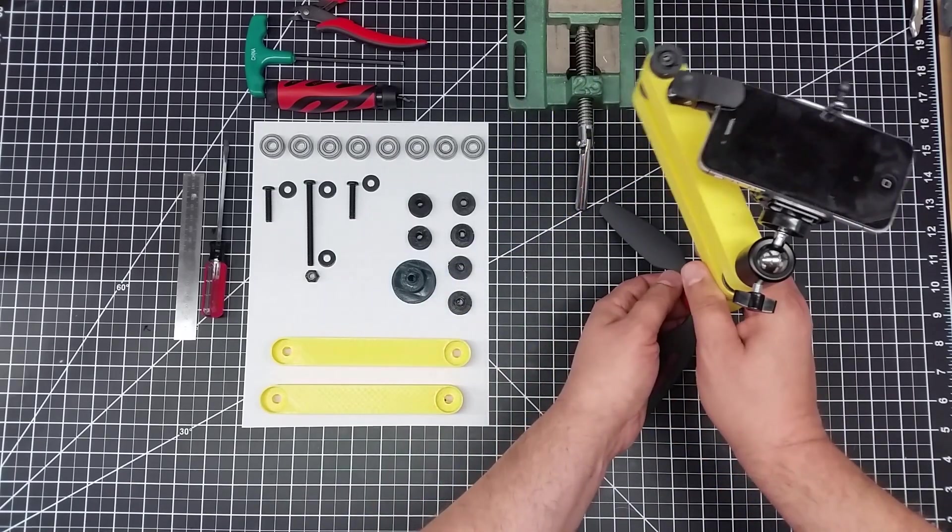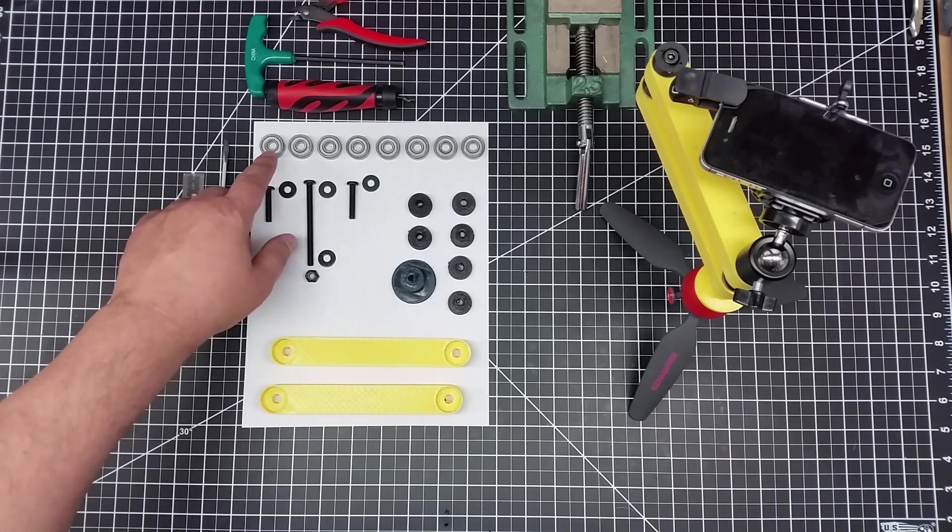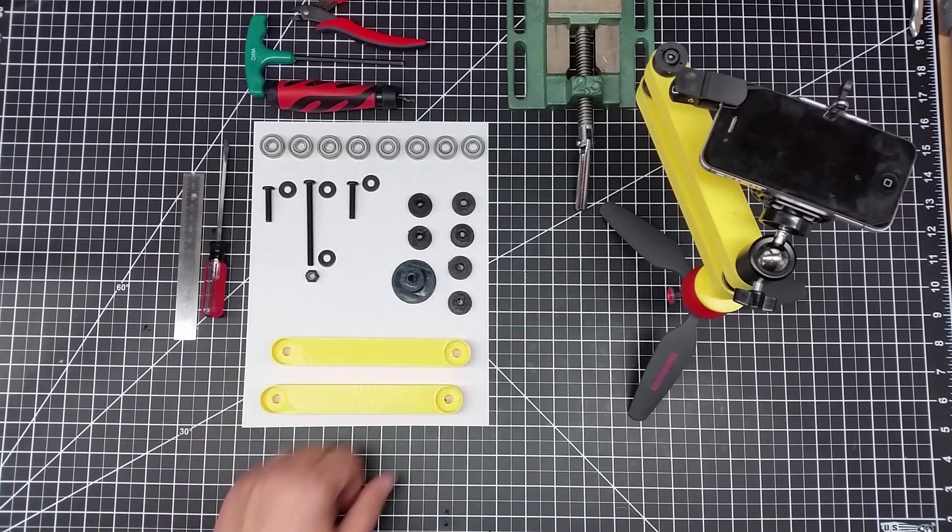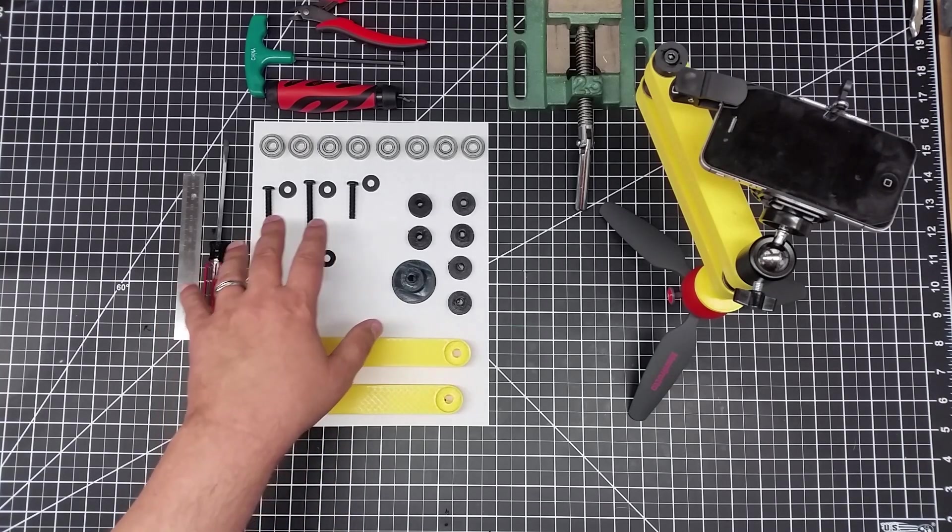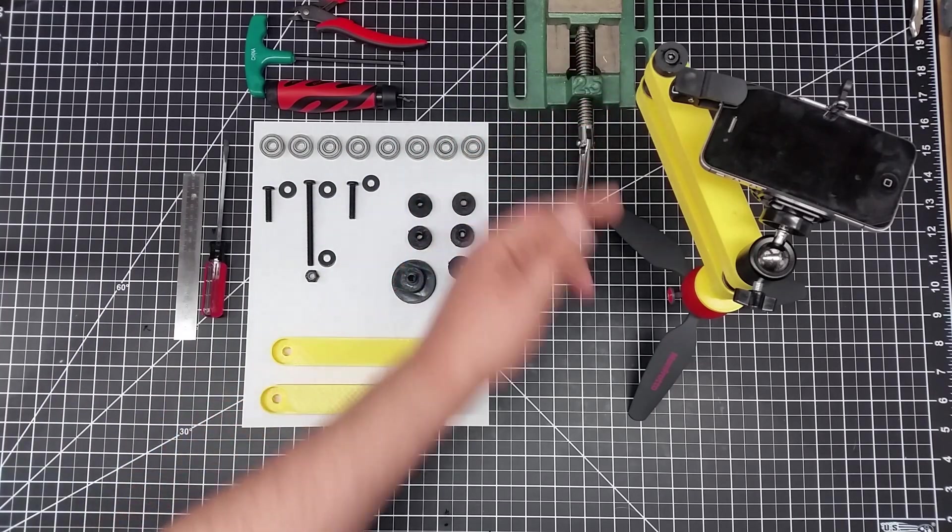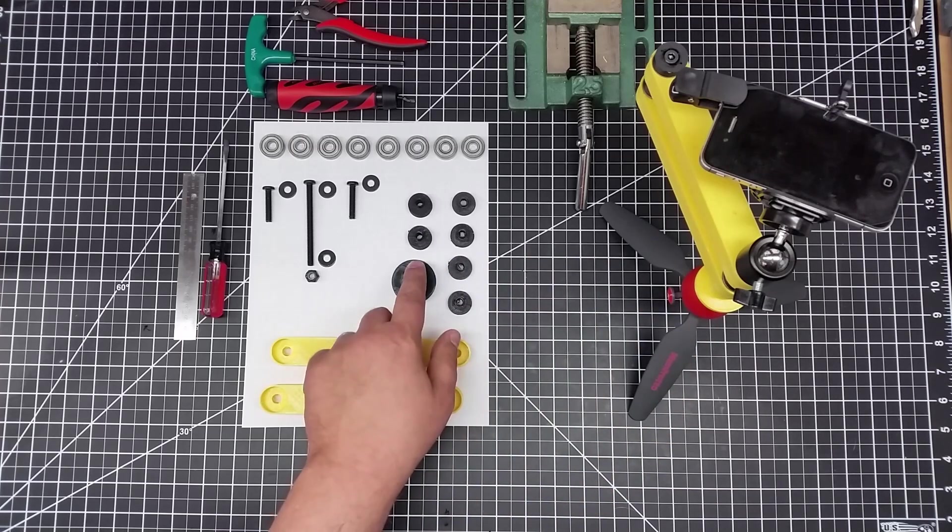But as you can see, if I move my hand out of the way, all the different dynamic movements that this can make, which is really, really interesting. And the way that this actually works is around a set of 608ZZ bearings. So there's actually eight of them. So there's four in each arm.